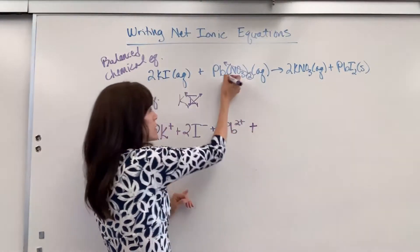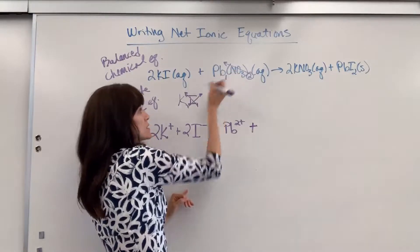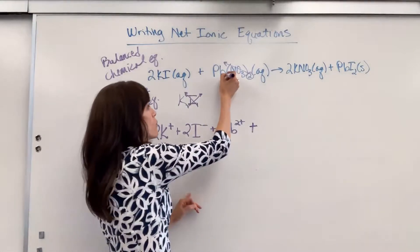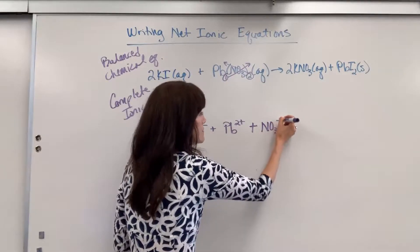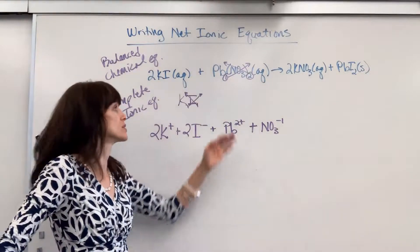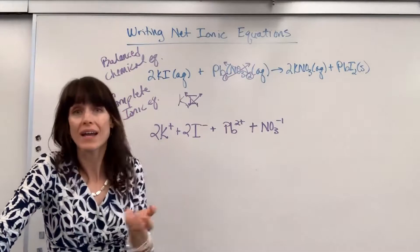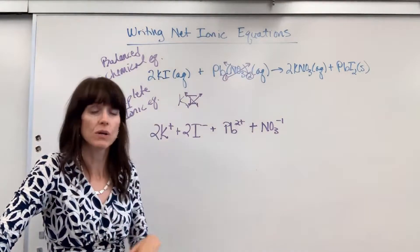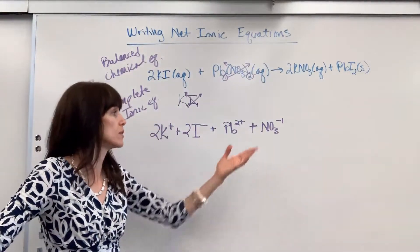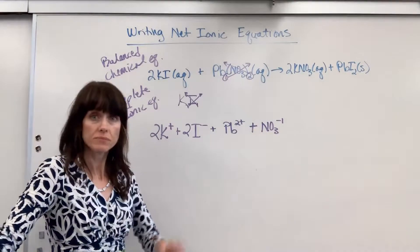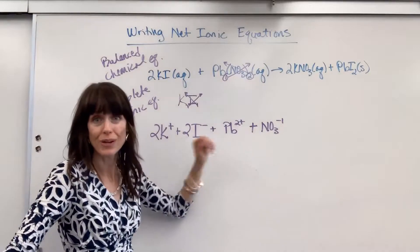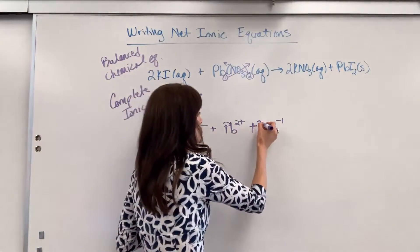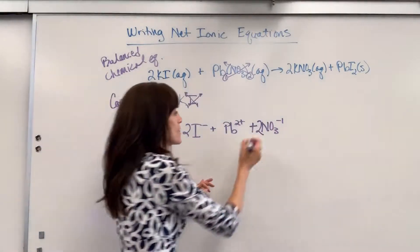Plus, now notice the understood subscript on lead is a one. So you cross that up. You get NO₃⁻. The anion gets a negative charge and it was a one. Now you might have nitrate memorized, or you could look up on a polyatomic table that nitrate is a minus one. Now let's see how many we have. I have one lead and I have two of the nitrates. So I'm going to put a two. Okay, let's continue.